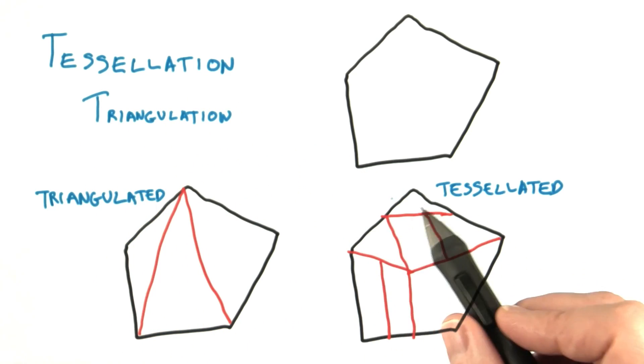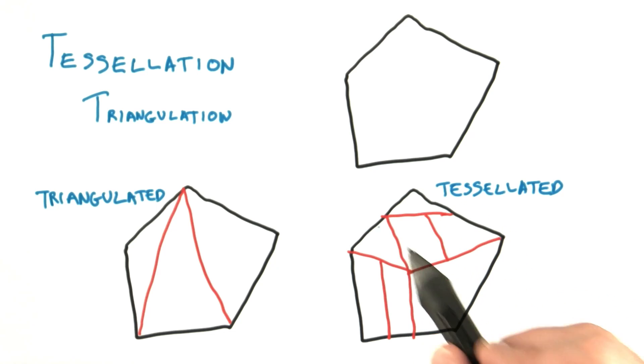Here's the same pentagon, tessellated in a fairly arbitrary way, with new vertices added inside the pentagon and connected together.